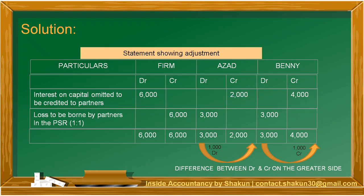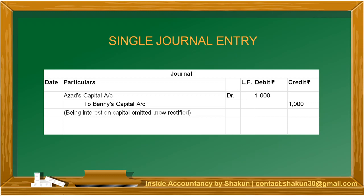This means Azad's capital account is to be debited with $1,000 and Benny's capital account is to be credited with $1,000. Since our accounts were already made, we could not do any cutting from the capital entry. That is why we have made an adjustment entry such that the error is rectified and the accounts show the correct position. Looking at the journal entry: Azad's capital account DR to Benny's capital $1,000, being interest on capital omitted now rectified. Please note that both debit and credit side totals should always be the same, as we follow the double entry bookkeeping system.